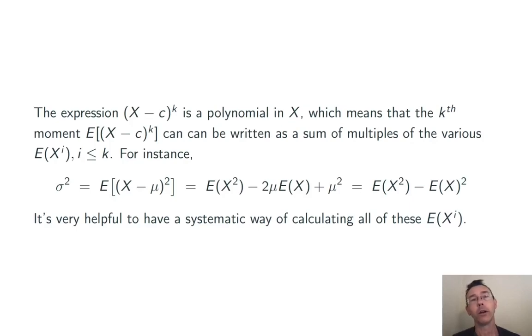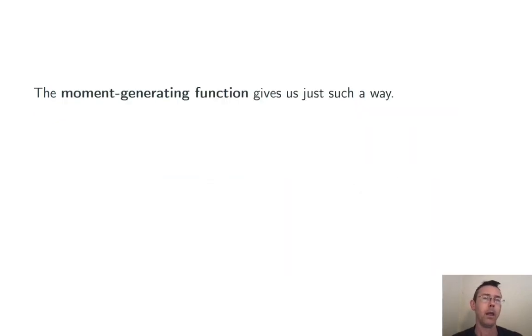It's already clear that we're going to want a systematic way for calculating the expected value of x to the i for i is any positive integer. The moment generating function gives us exactly a method for that. Here's the definition. M(t) is the expected value of e to the (tx), where e is just the exponential number as you'd expect. And t is essentially a dummy variable here.